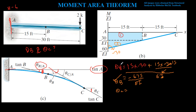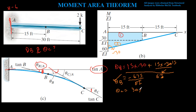Theta C is very simple — it equals theta C/A, which is the area between A and C on the M/EI diagram. That is the whole triangular area: minus 60 times 30 divided by 2, which gives minus 900 over EI.